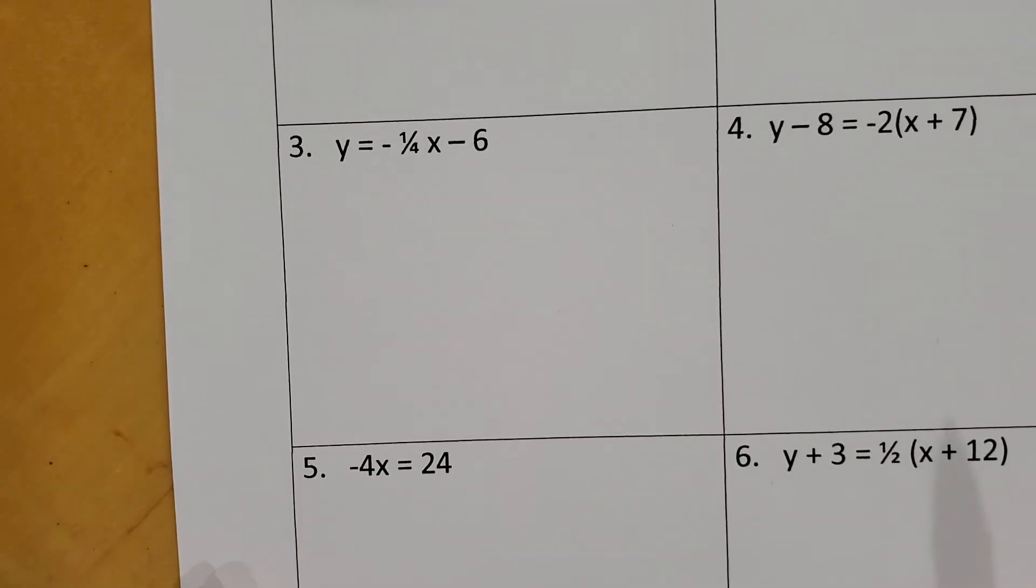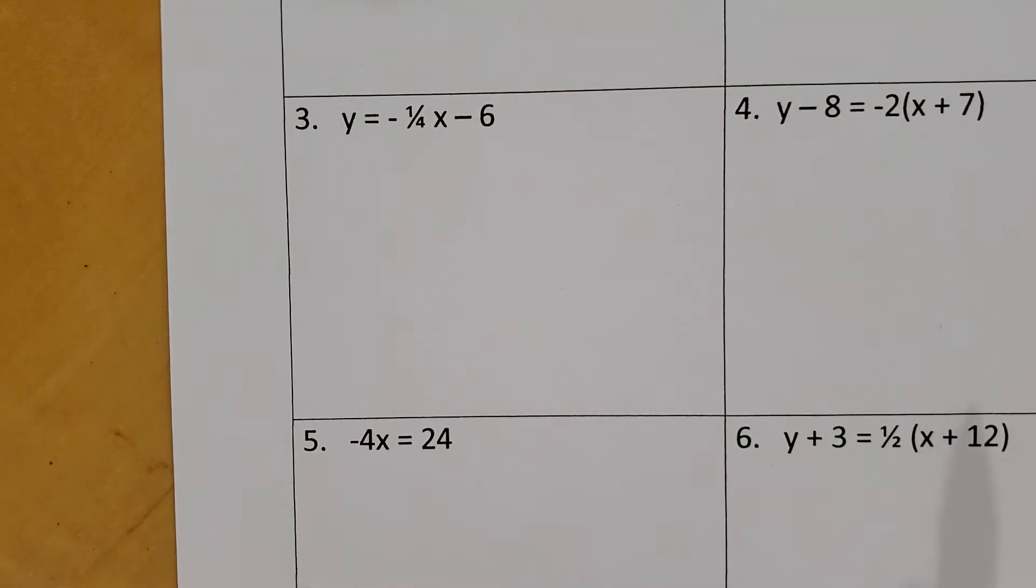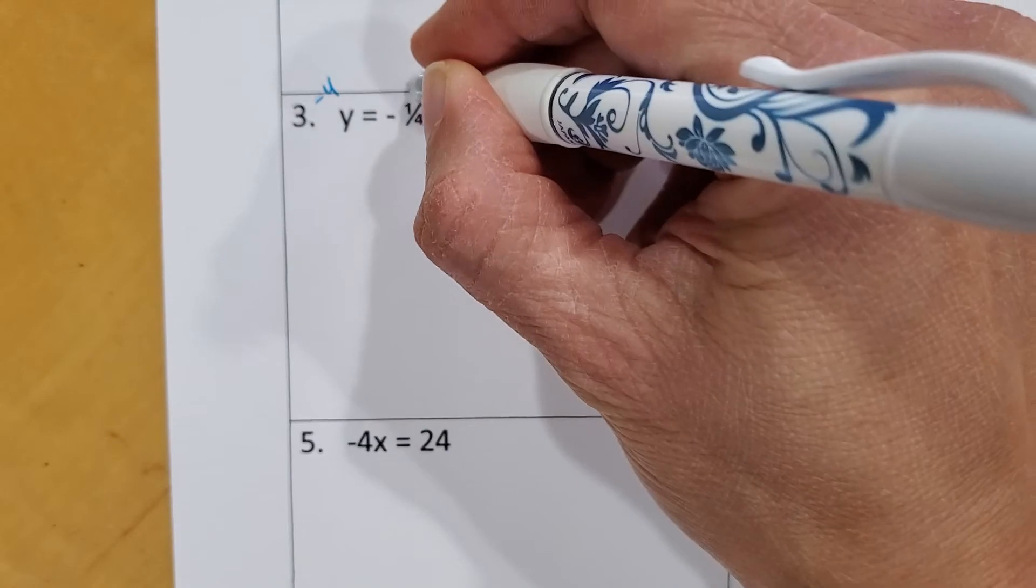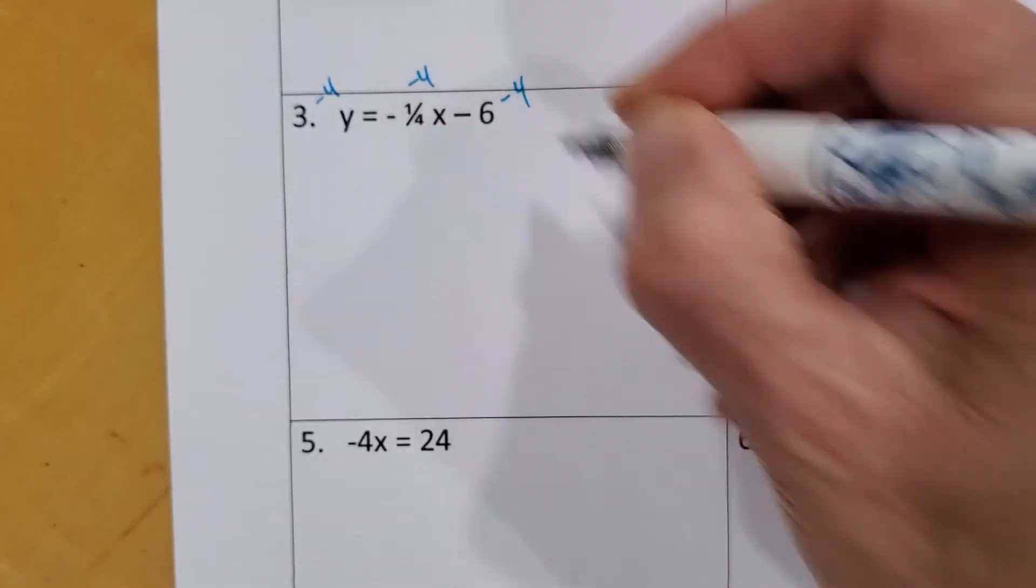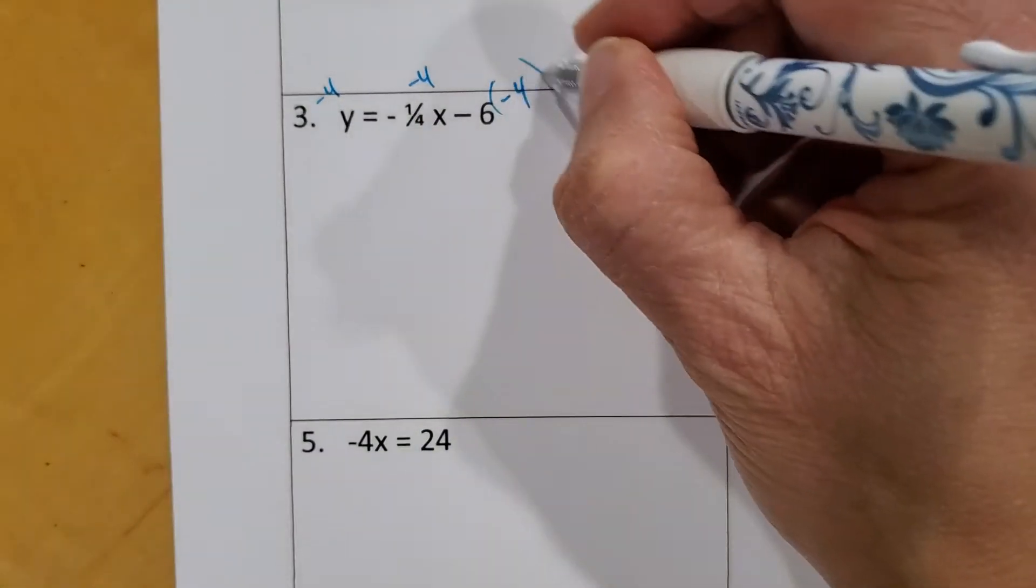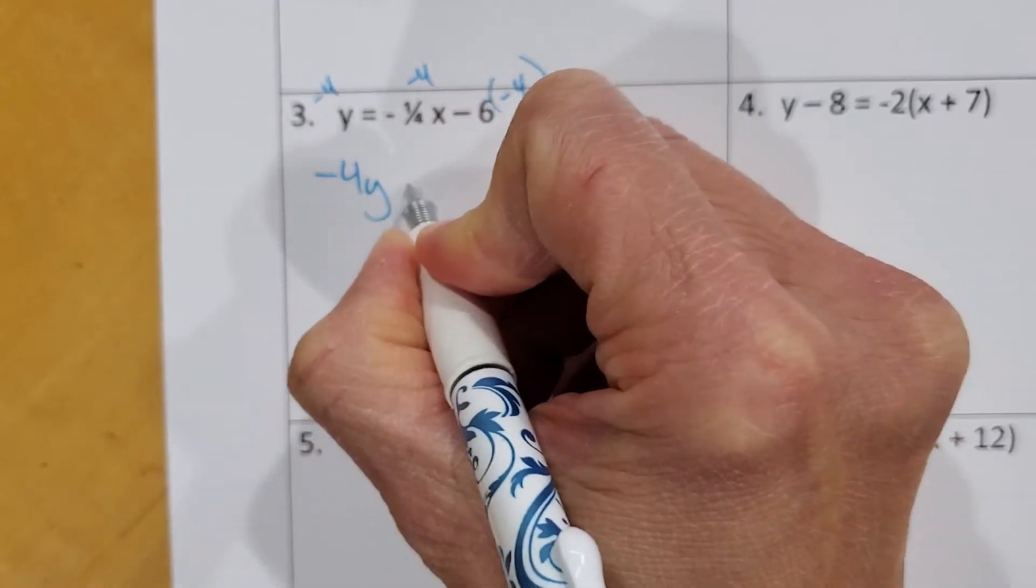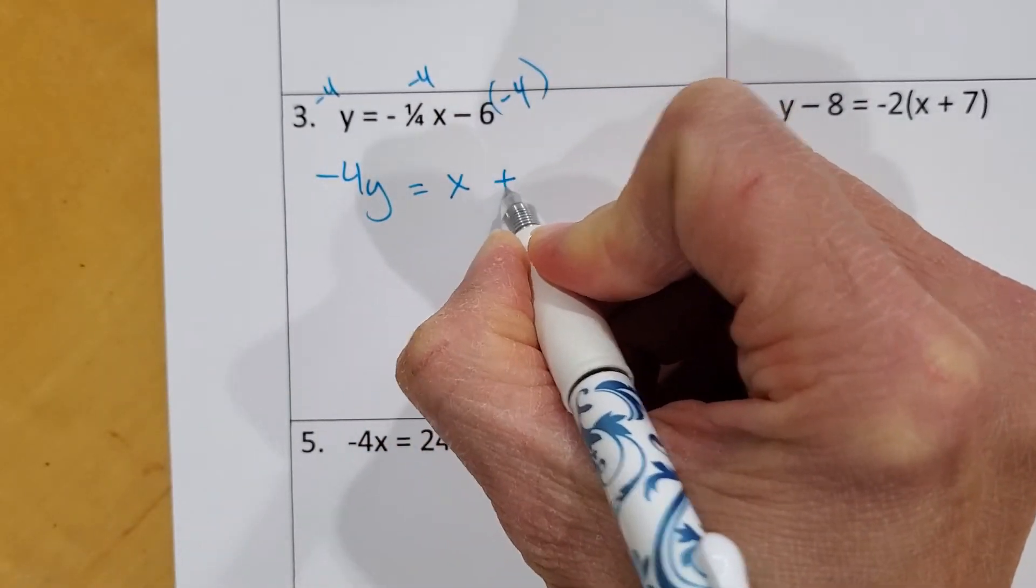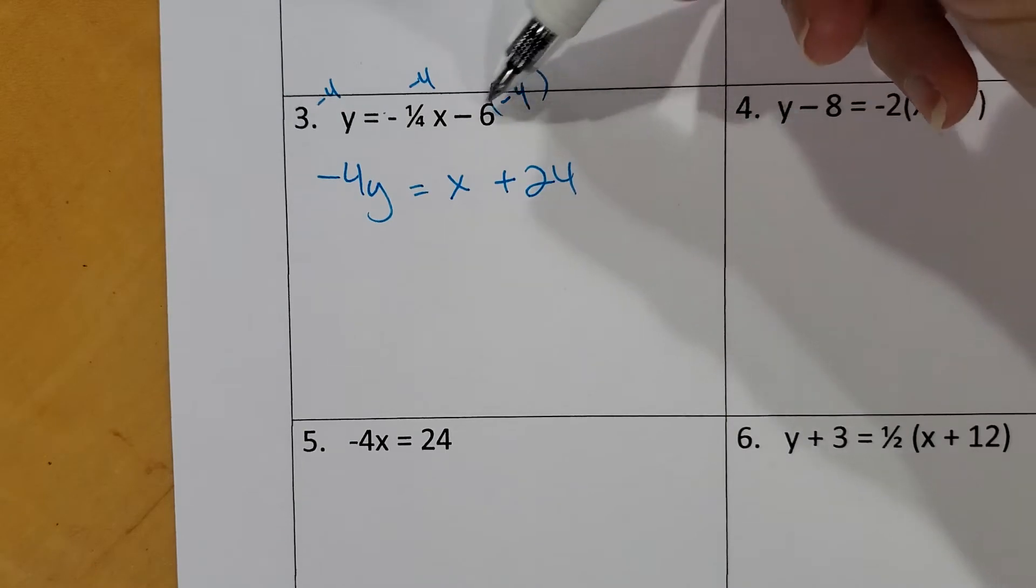All right. We'll try another one. So here, it's in slope-intercept form, but we also have a fraction. So not only do we need to get rid of the fraction, we need to move X over. And you can do either one of those first. You could move X over first, or you can get rid of the fraction first. I prefer to get rid of the fraction first. So I'm going to multiply everything by negative 4 just because that's a negative 1 fourth. So I'm going to multiply.